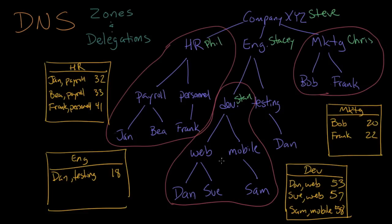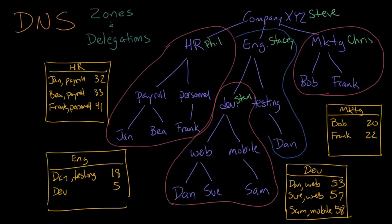Because development is run by Stan, Stacy says she doesn't need to manage Stan's details directly. Stan has made his own phone list, so Stacy just writes down that development as a whole is at extension 5. We can now draw the circle around Stacy's area, which obviously includes Dan and testing, but also includes just the top part of Stan's area. So Stacy knows about Dan and testing, but all she needs to know about development is that it's run by Stan.